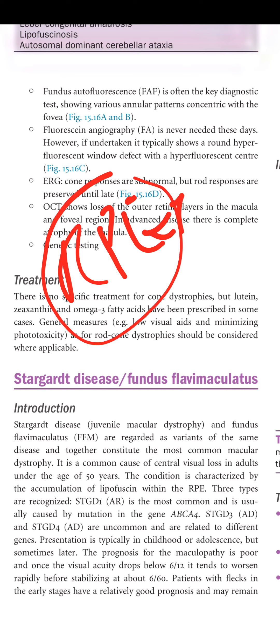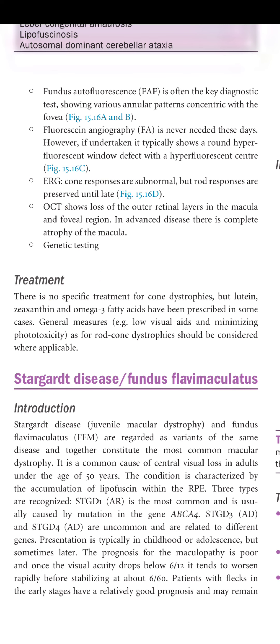Three types are recognized: Stargardt disease 1, autosomal recessive, is the most common and usually caused by mutation in the ABCA4 gene. Stargardt disease 3 and Stargardt disease 4, both autosomal dominant, are uncommon and related to different genes. Presentation is typically in childhood or adolescence, but sometimes later.